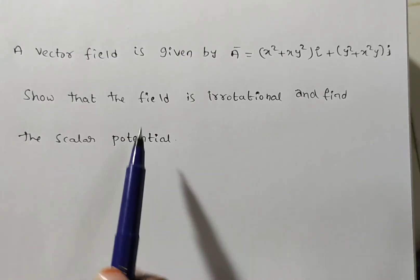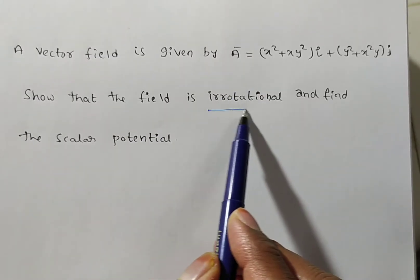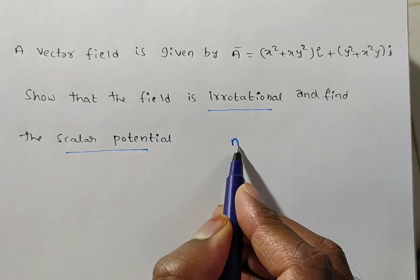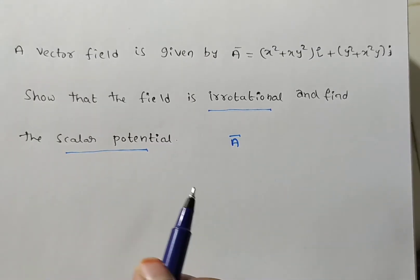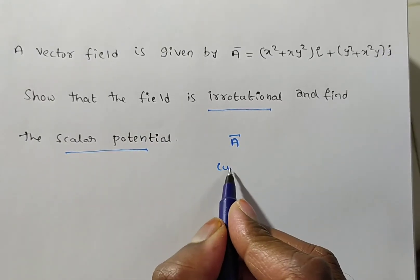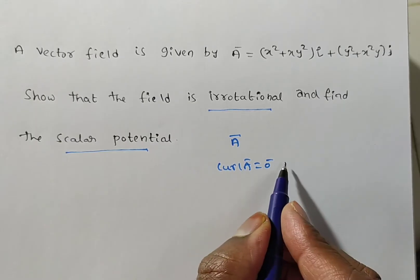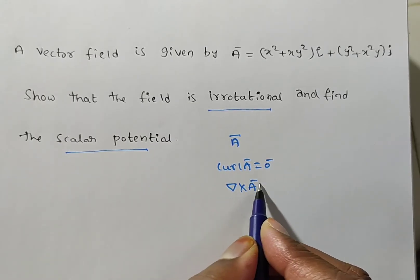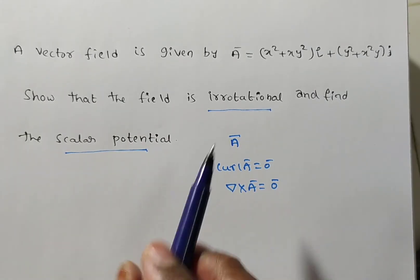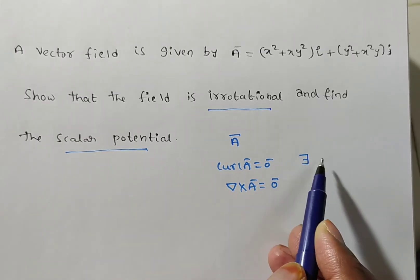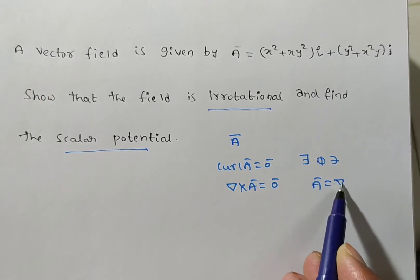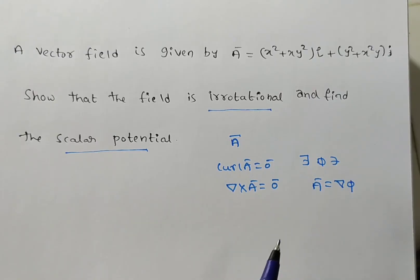For the given vector, we have to prove it is irrotational and then find the scalar potential function. If any vector A bar is given, to show it is irrotational, it is enough to prove curl A bar equals 0 bar — that is del cross A bar equals 0 bar. If it is an irrotational vector, then there exists a scalar potential function φ such that A bar equals del φ, i.e., A bar equals gradient φ.